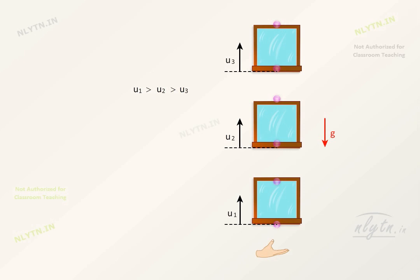So we can intuitively say that the average speed for the lowest window will be highest, followed by the middle window and will be least for the topmost window.